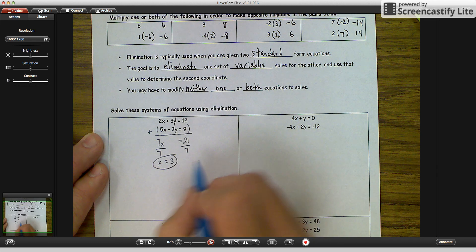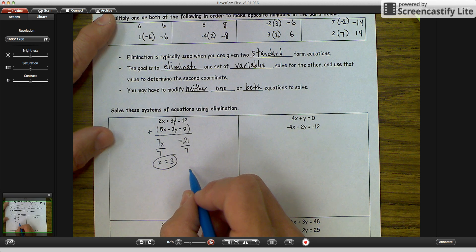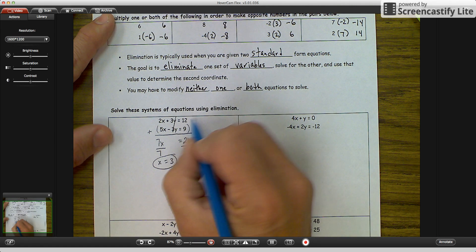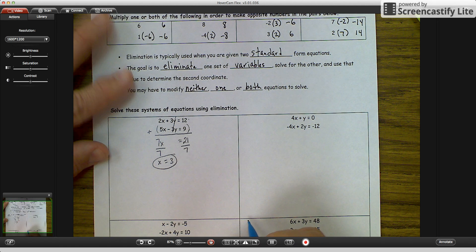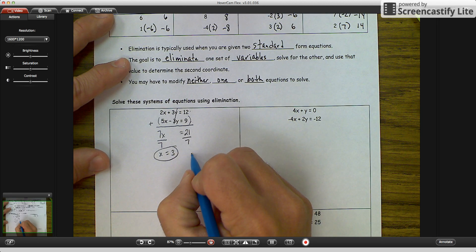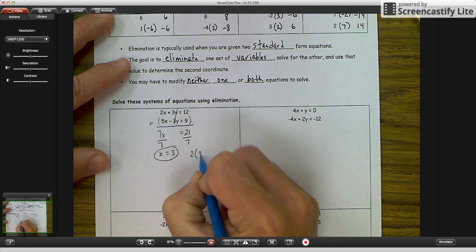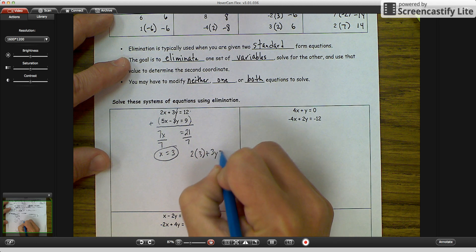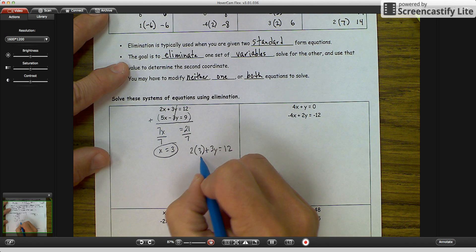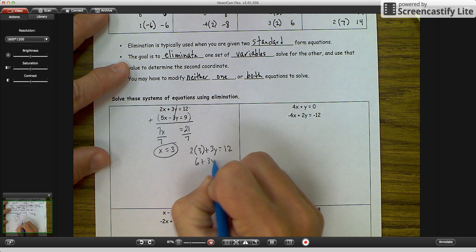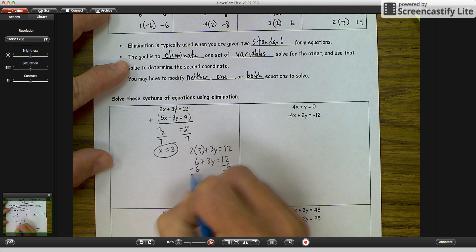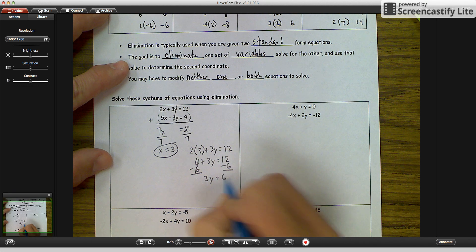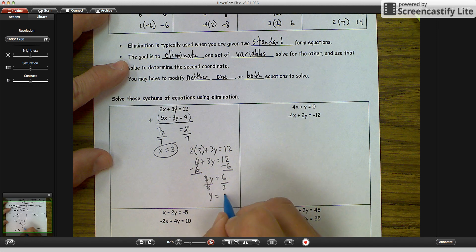Now we are going to take our x equals 3 and do what we did when we did substitution. We are going to plug it back into either the top equation or the second equation. It does not matter which one you pick, you will get the same answer. I am going to select the top equation. So I am going to go 2 times 3 plus 3y is equal to 12. 2 times 3 is 6, plus 3y is equal to 12. Subtract 6, cancels here. You get 3y is equal to 6. Divide by 3. You get y is equal to 2.